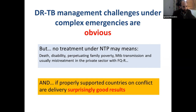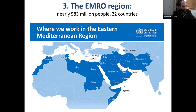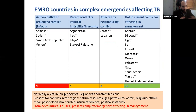There are plenty of good news. In the next 10 minutes, we will present some successful stories in the EMRO region, which covers more or less 600 million population and 22 countries. From these 22 countries, 50% face complex emergencies affecting TB management. We can divide these countries into: those with active or prolonged conflict or political instability; and those affected because of neighboring conflict — like Jordan and Lebanon, which are not in conflict but are receiving many refugees and migrants.